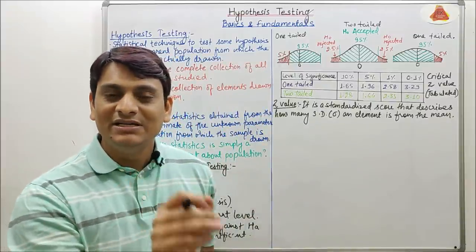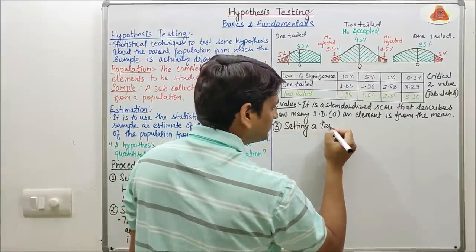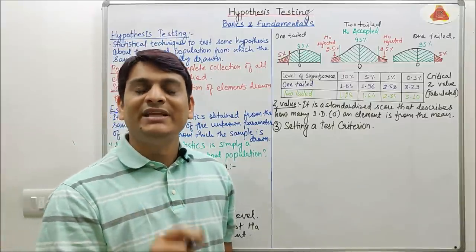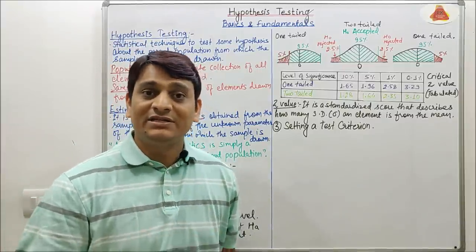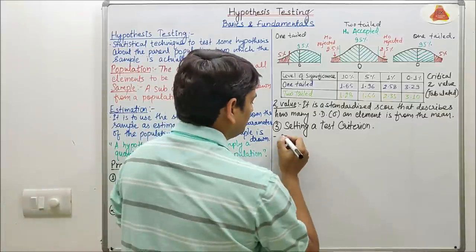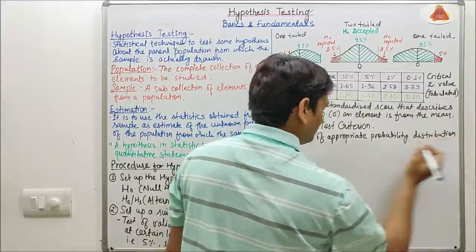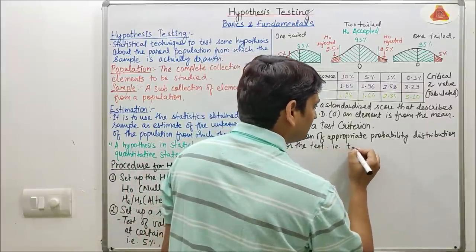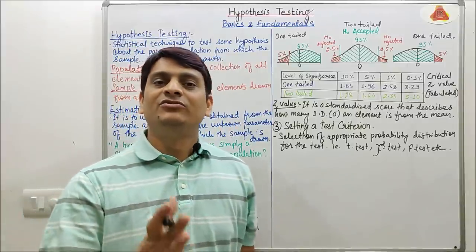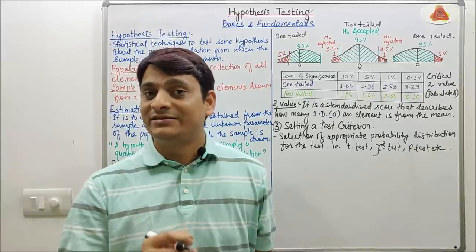Now coming to the third step: setting a test criterion. In this step, selection of an appropriate probability distribution takes place. Some probability distributions used are Student's T-test, chi-square test, Fischer's F-test, etc. Now coming to the fourth step: computation. In this step all calculations will be done after selecting the statistical method.